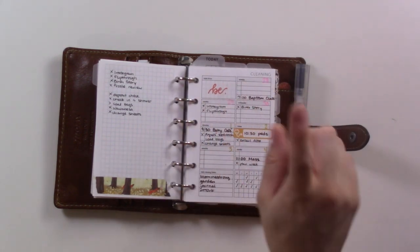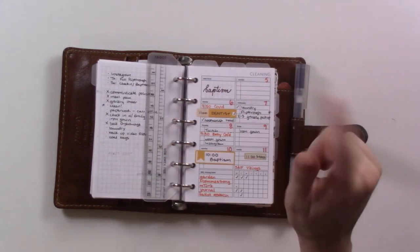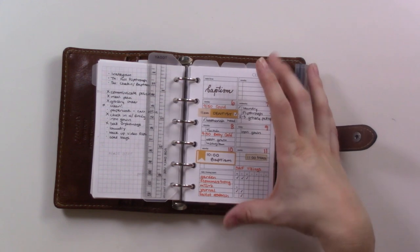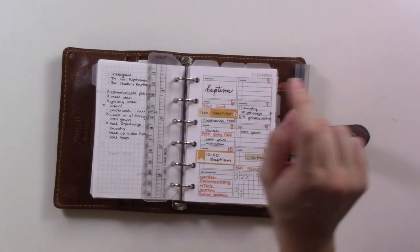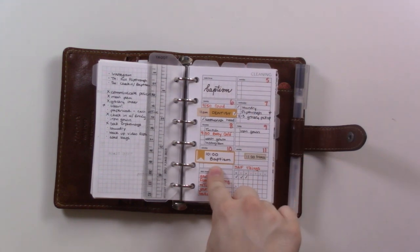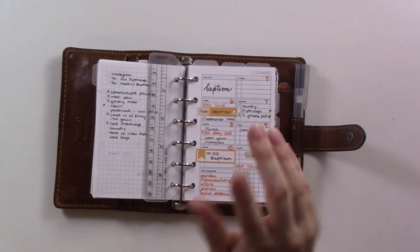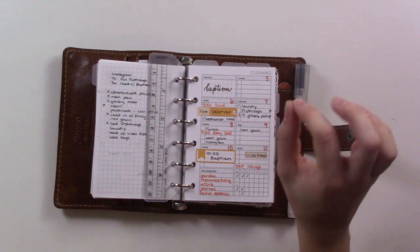This weekly spread, I've been using this cleaning tracker from Peanuts Planner Co as my weekly spread because it's like a week on one page. The ironic thing about that is that my actual goal this week is to clean because our daughter's baptism is here on Saturday and we're having some people over.